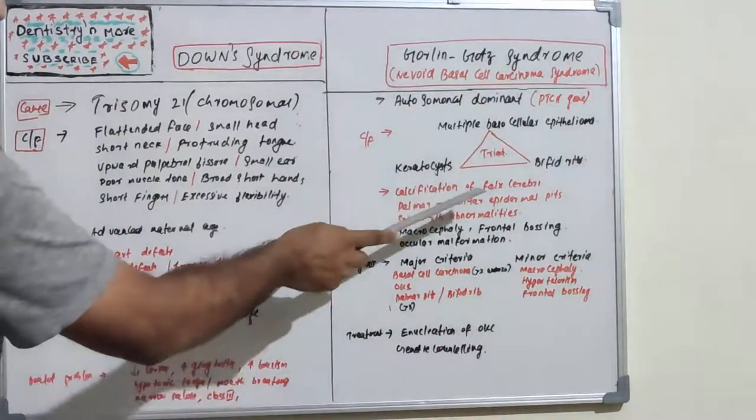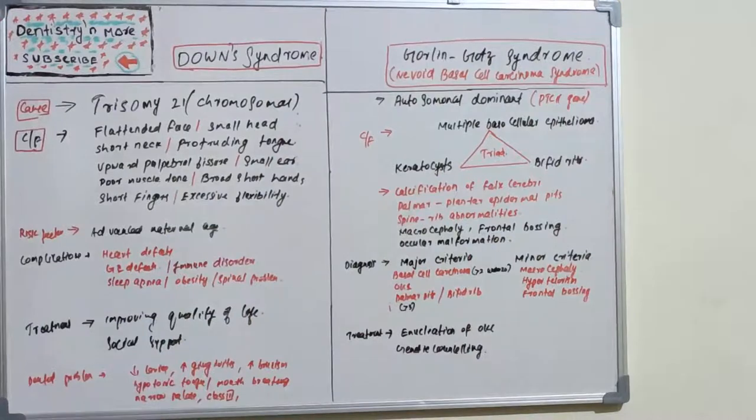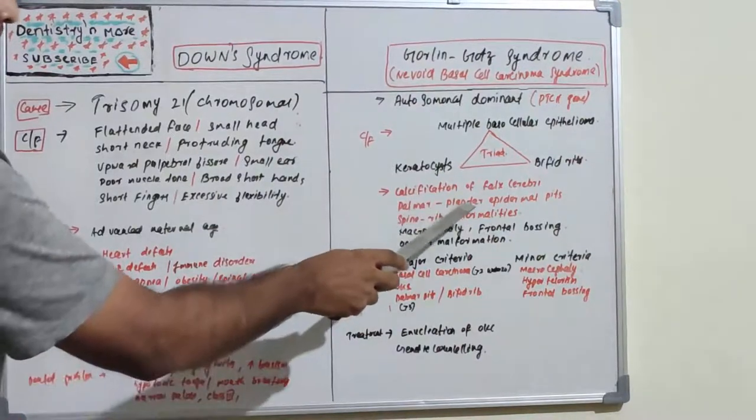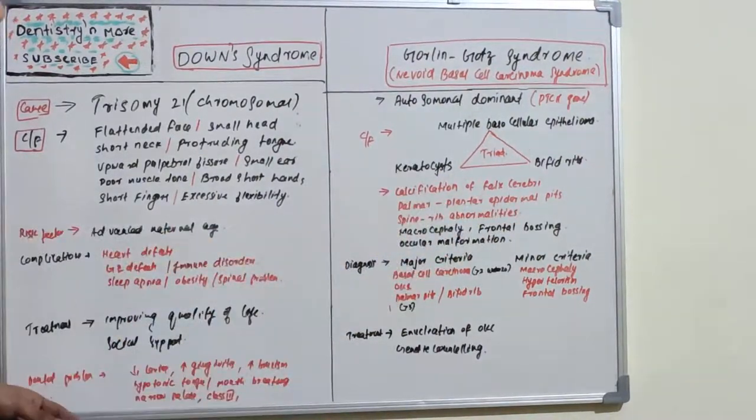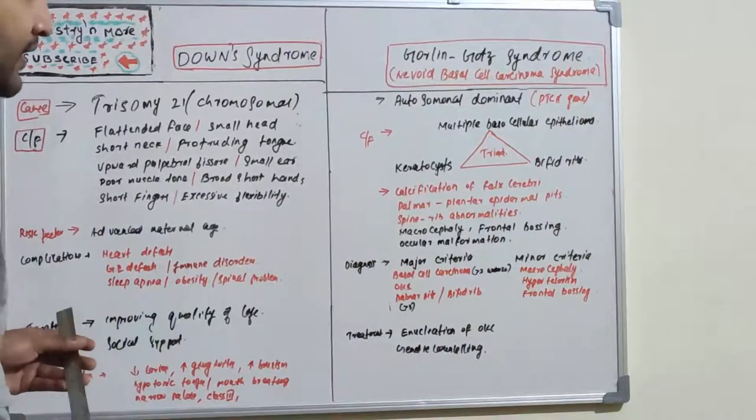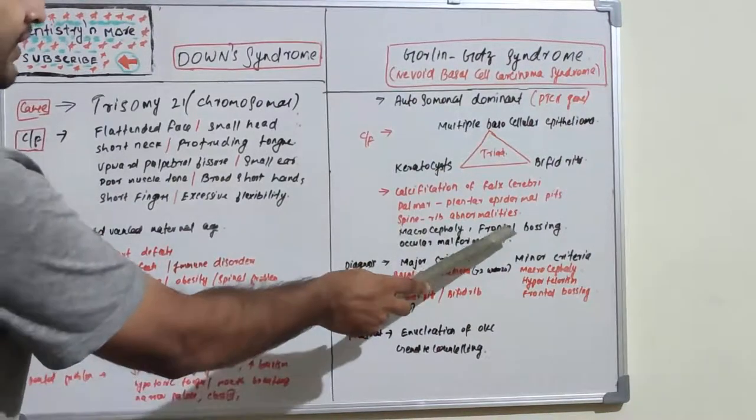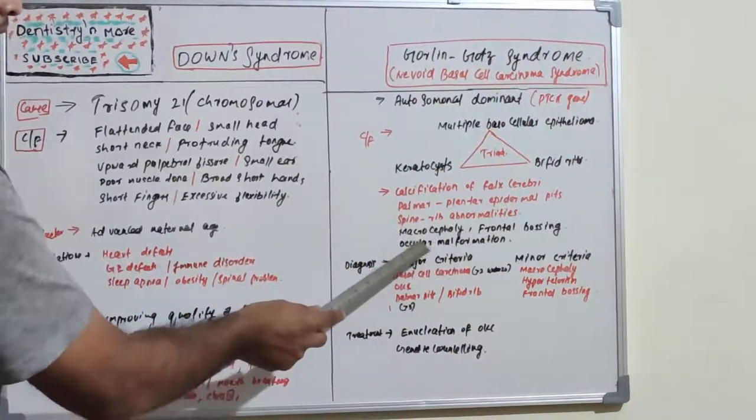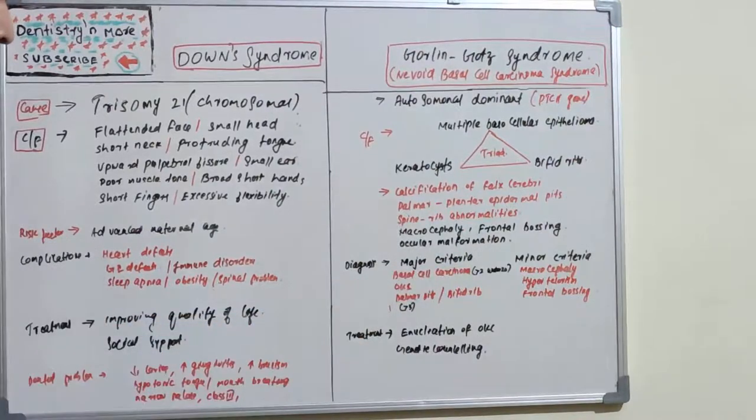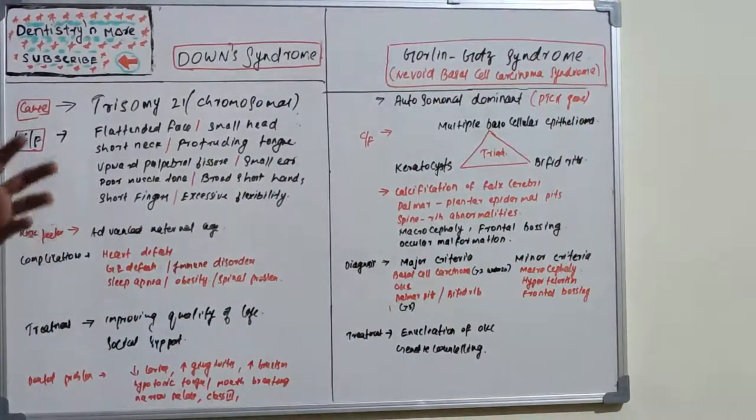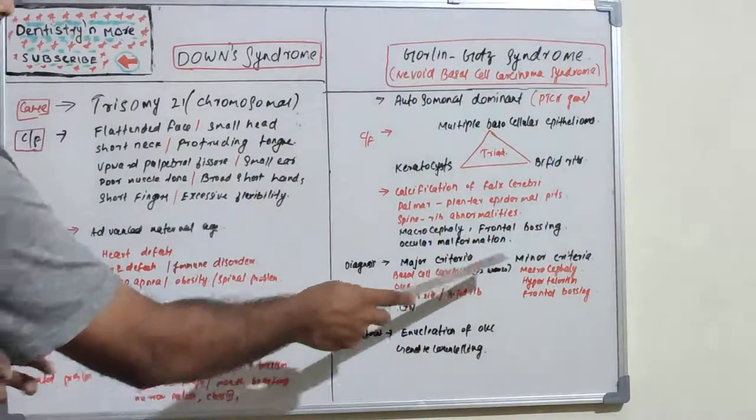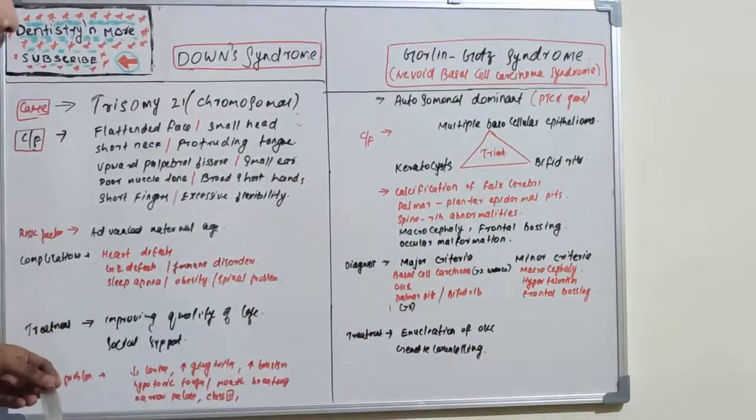The first one is calcification of falx cerebri, palmar-plantar epidermal pits, spine rib abnormalities, macrocephaly, frontal bossing, and ocular malformation. This will be most commonly diagnosed by major criteria and minor criteria.